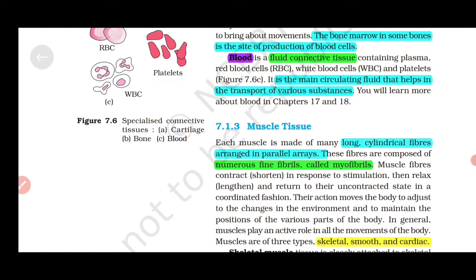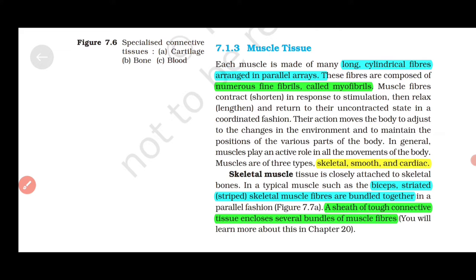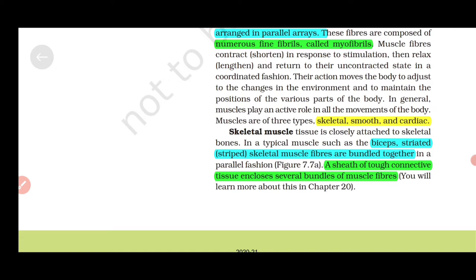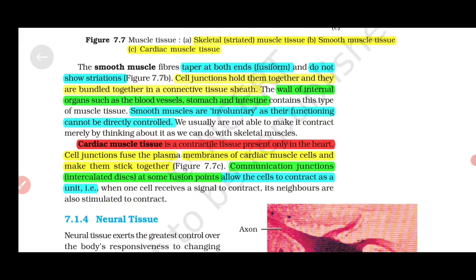7.1.3 Muscle Tissue consists of long cylindrical fibers arranged in parallel arrays with numerous fine fibrils called myofibrils. Three types: skeletal, smooth, and cardiac. Skeletal muscle like biceps is striated. Skeletal muscle fibers are bundled together in a sheath of tough connective tissue which includes several bundles of muscle fibers. Smooth muscle fibers taper at both ends in fusiform shape and do not show striations. Cell junctions hold them together and they are bundled together in a connective tissue sheath. They are found in walls of internal organs such as blood vessels, stomach, and intestine. Smooth muscles are involuntary as their functioning cannot be directly controlled.